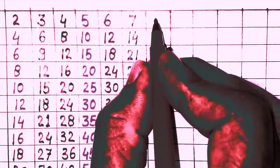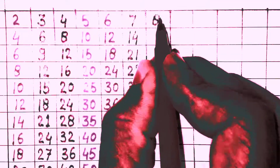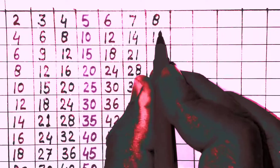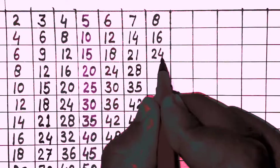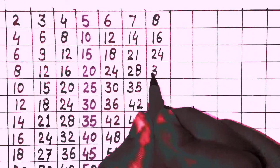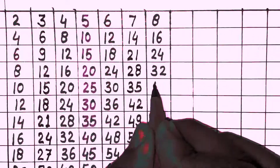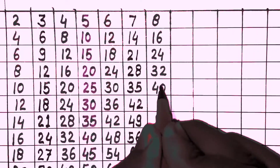8 times 1 is 8, 8 times 2 is 16, 8 times 3 is 24, 8 times 4 is 32, 8 times 5 is 40.